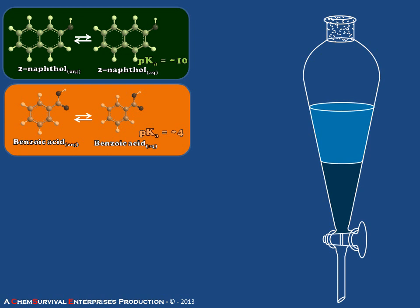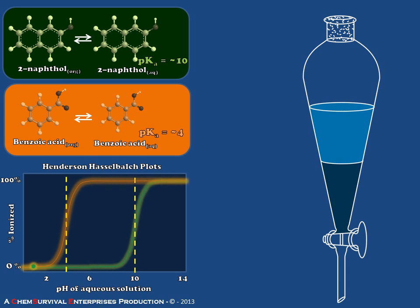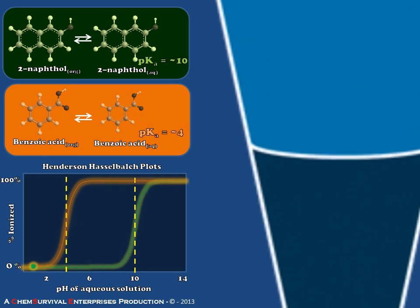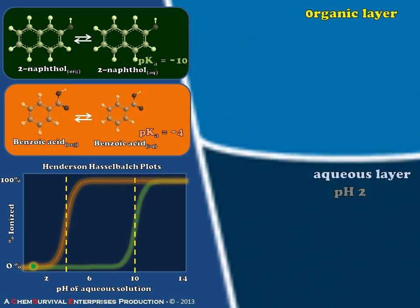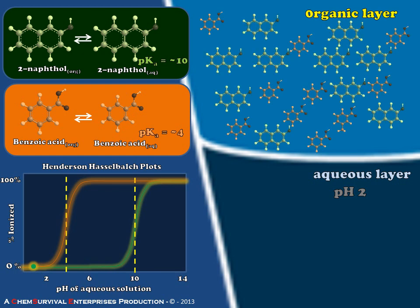Again, just as a quick background, remember we tried to separate a physical mixture of benzoic acid and naphthol using a liquid-liquid extraction and their Henderson-Hasselbalch plots. When we did this, we realized that very low pH values were going to have everything in the organic layer, which is not going to give us a very good extraction.